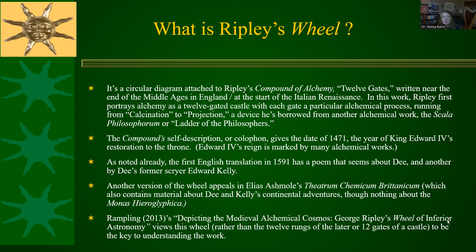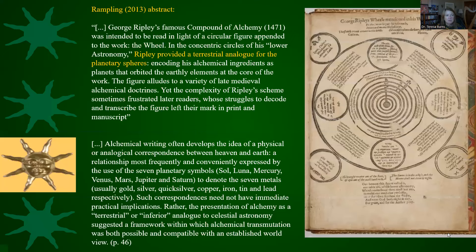Rampling's 2013 article, which I'll be leaning on heavily, discusses George Ripley's Wheel of Inferior Astronomy and views this wheel as the key to understanding Ripley's work. From her abstract: in the concentric circles of his lower astronomy — lower, inferior, interior all mean the same thing — Ripley provided a terrestrial analog for the planetary spheres. That is what Dee does also. Those of you who are ceremonial magicians, if you charge seals using Gryphon magic, you are doing something similar to what Dee is doing.